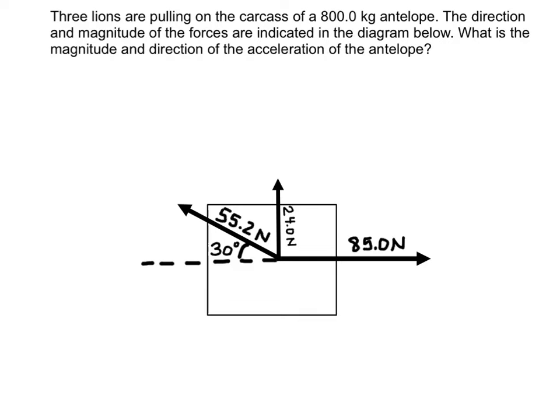In this video we are going to solve a more difficult net force problem. This problem is more difficult because there are three forces acting on this object and they are all going in different directions. Three lions are pulling on the carcass of an 800 kg antelope. The direction and magnitude of the forces are indicated in the diagram below. What is the magnitude and direction of the acceleration of the antelope?